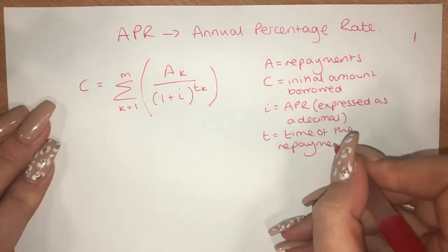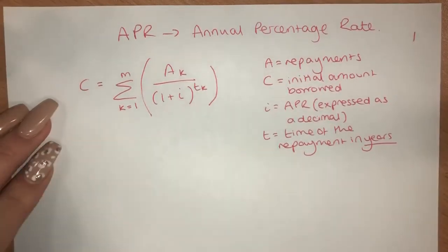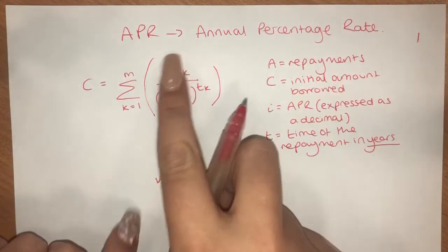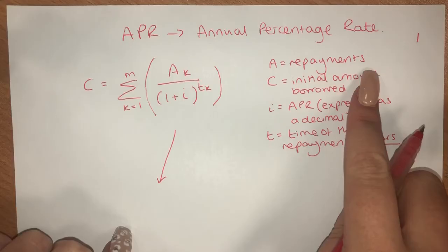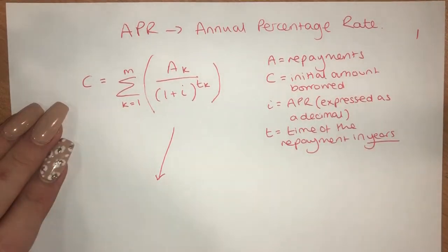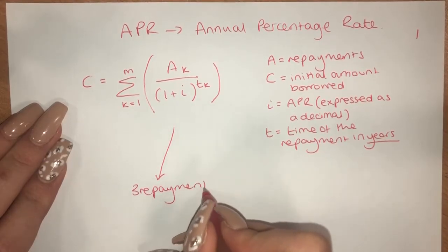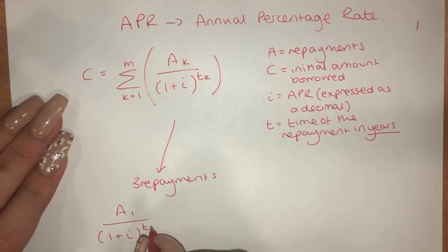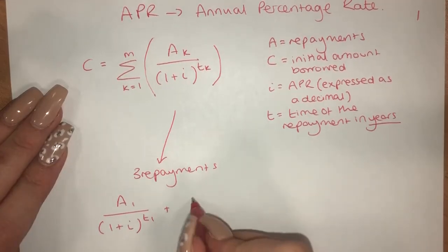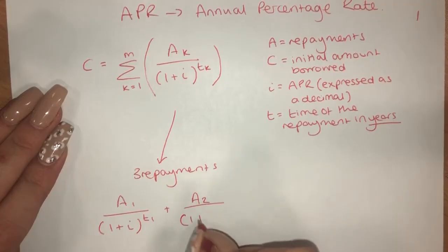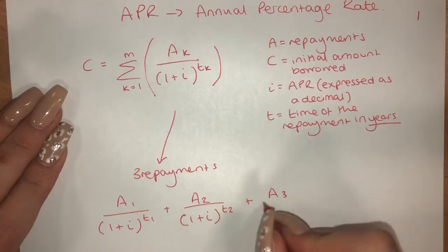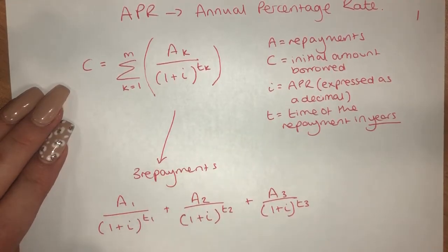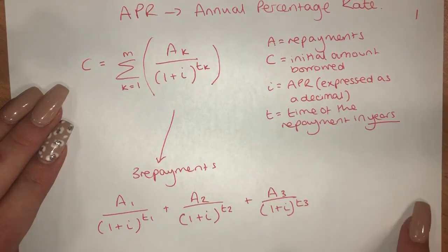So again, in years is really, really important. Now what this formula actually means is that there could be lots of fractions, and the number of these fractions that you need to add together is equal to the number of repayments. So for example, if there were three repayments, you would need a fraction for the first repayment, added to another one with the second repayment, added to a third one with the third repayment at the third period of time. However many fractions you have is equal to the number of repayments. If there were two repayments, I'd only need those two. If there were five, I'd need to go up to A5.